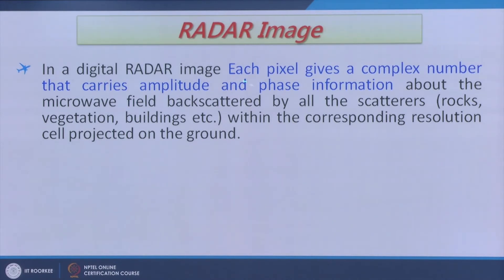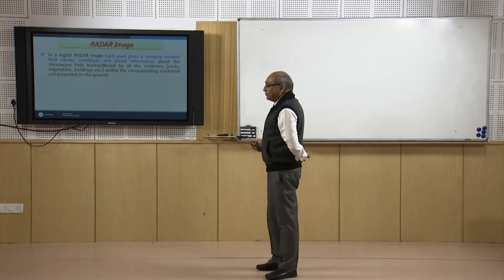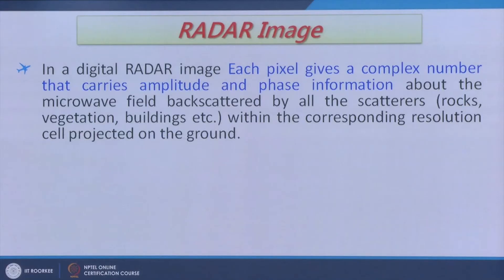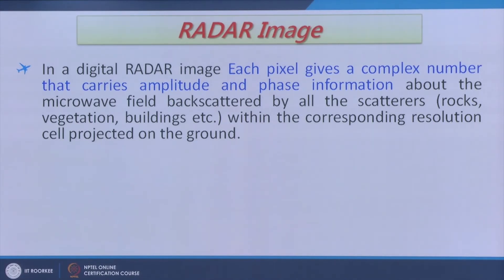Each pixel of a radar image is a complex number — it is not a simple image like passive remote sensing where a pixel has a single digital number. A radar image pixel contains two major pieces of information: amplitude and phase. The amplitude and phase relate to the microwave field scattered by scatterers like rocks, vegetation, buildings, etc. This is very important to note: in normal passive remote sensing the pixel value is just one value, but here it is a complex number carrying both amplitude and phase information.